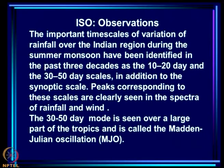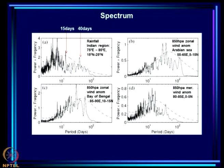The important time scales of variation of rainfall over the Indian region during the summer monsoon have been identified over the past three decades as the 10 to 20 day (quasi bi-weekly) scale and the 30 to 50 day scale, in addition to the synoptic scale. Peaks corresponding to these scales are clearly seen in the spectra of rainfall and wind. In the spectrum of rainfall over the central Indian region from Goswami's paper, there is a peak corresponding to 15 days, a peak at 40 days, and peaks corresponding to the synoptic scale.